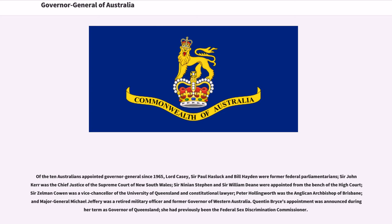Of the ten Australians appointed Governors-General since 1965: Lord Casey, Sir Paul Hasluck, and Bill Hayden were former federal parliamentarians; Sir John Kerr was the Chief Justice of the Supreme Court of New South Wales; Sir Ninian Stephen and Sir William Deane were appointed from the bench of the High Court; Sir Zelman Cowen was Vice Chancellor of the University of Queensland and constitutional lawyer; Peter Hollingworth was the Anglican Archbishop of Brisbane; and Major General Michael Jeffery was a retired military officer and former Governor of Western Australia. Quentin Bryce's appointment was announced during her term as Governor of Queensland; she had previously been the Federal Sex Discrimination Commissioner.